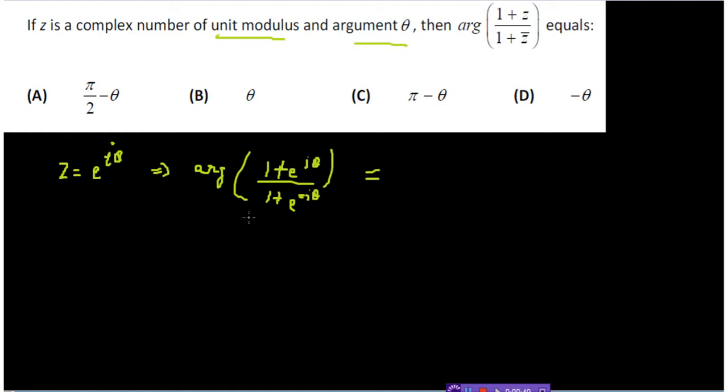Now if you simplify the term inside the argument, we have 1 plus e to the power i theta upon 1 plus e to the power i theta, whole divided by e to the power i theta. So this goes in the numerator and these two terms get cancelled, so we are left with argument of e to the power i theta.